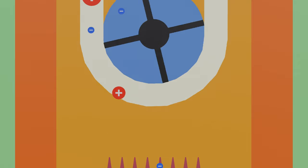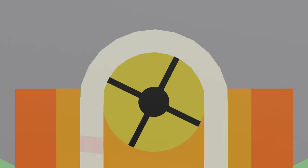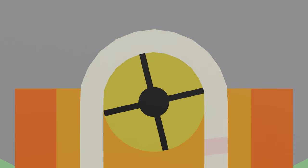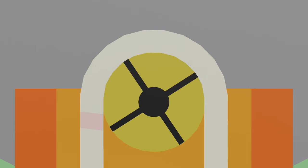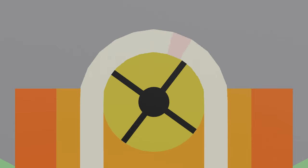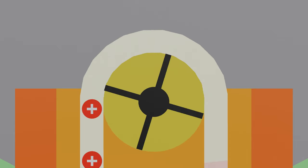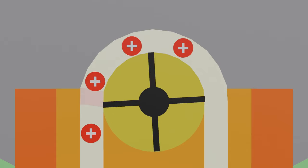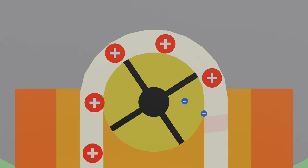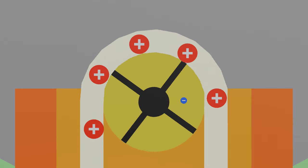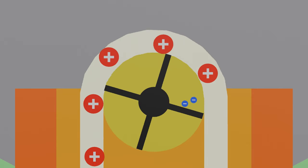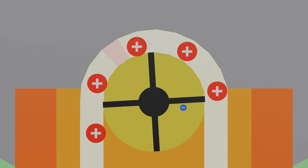These positive ions ride the belt up to the top of the Van de Graaff generator, where they reach the other roller, this time made from a material higher up in the triboelectric series, such as aluminum. As the rubber belt rubs over the top roller, electrons are transferred from the roller to the belt, neutralizing the positive ions and leaving the belt with no net charge as it descends back down the column.